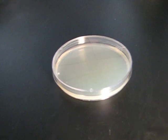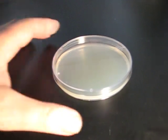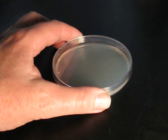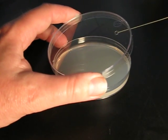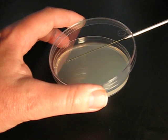Here we see the proper method for preparing a streak plate. The loop has already been dipped into the culture tube and is held perpendicularly to the surface of the medium.